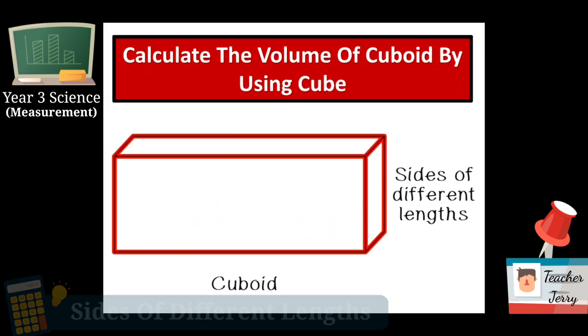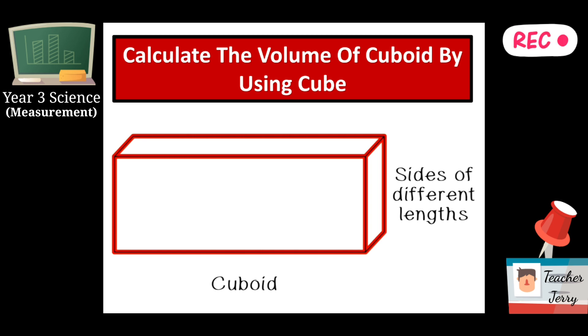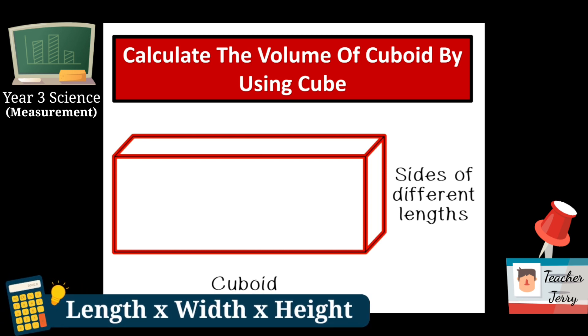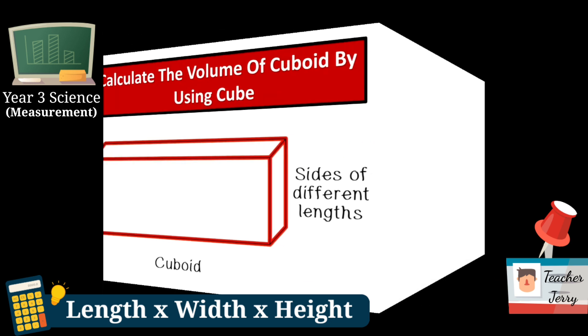An example of a cuboid is something like a tissue box, kotak tissue, with different lengths. Panjang dia lebih panjang, ketinggian dan lebarnya adalah berbeza. This is a cuboid.